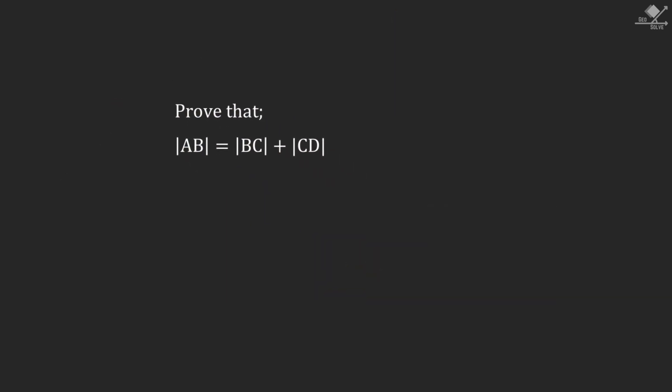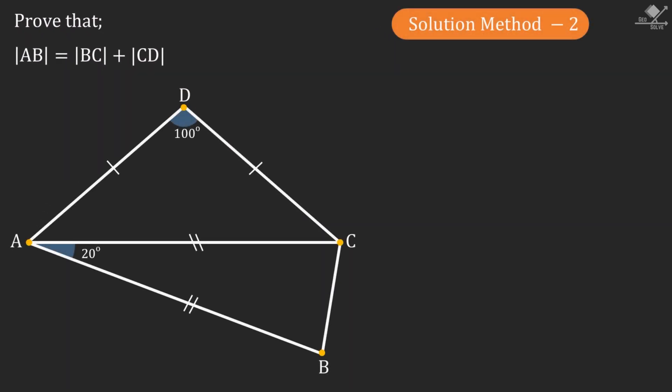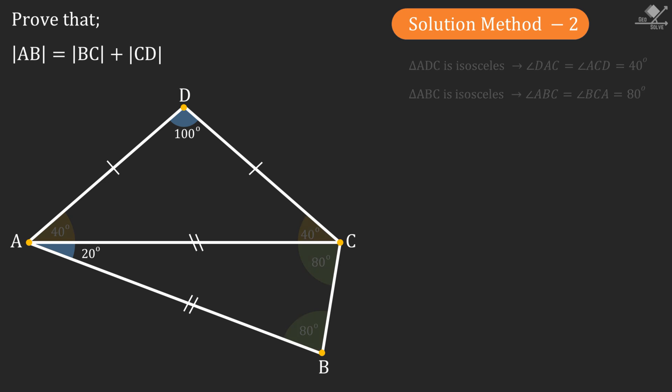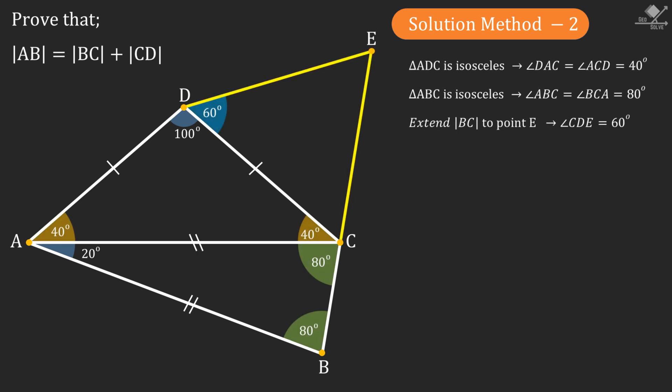Now let's start our second solution method. First let's write down the angles we know. Now let's extend the line segment BC to a point E such that angle CDE is 60 degrees. From here we can see that triangle DEC is an equilateral triangle.